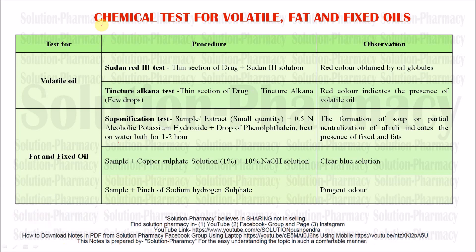Hello friends, welcome to the channel Solution. In today's video we will tell you the chemical identification test for volatile oil, fat and fixed oil — meaning if volatile oil is present in any sample, or fat and fixed oil, these can be identified by chemical test, besides other phytochemicals like alkaloid, glycoside, tannin, resin, and flavonoids. These other chemical identification tests have already been uploaded, so let's start today's topic.